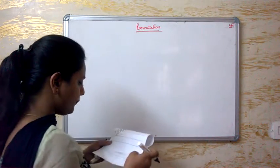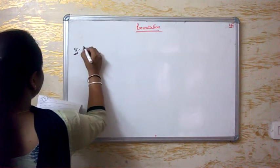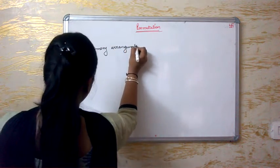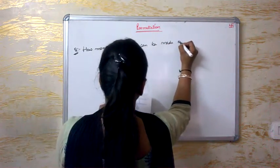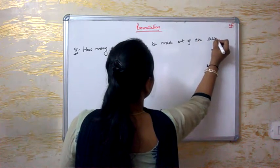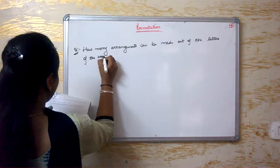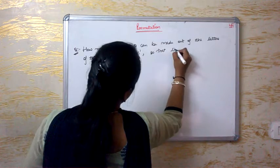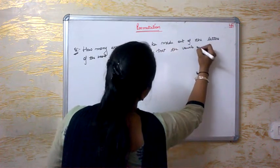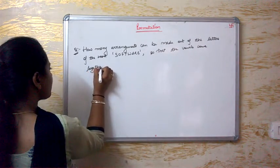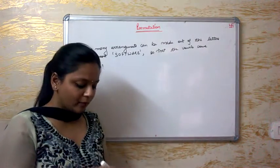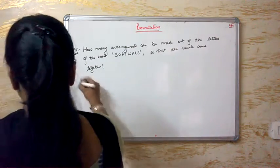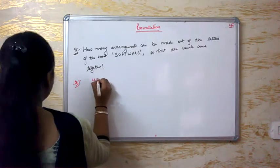Now I'll write down one more question for you to try. How many arrangements can be made out of the letters of the word SOFT so that the vowels come together? I'll give the answer also: the answer is 4320 ways.